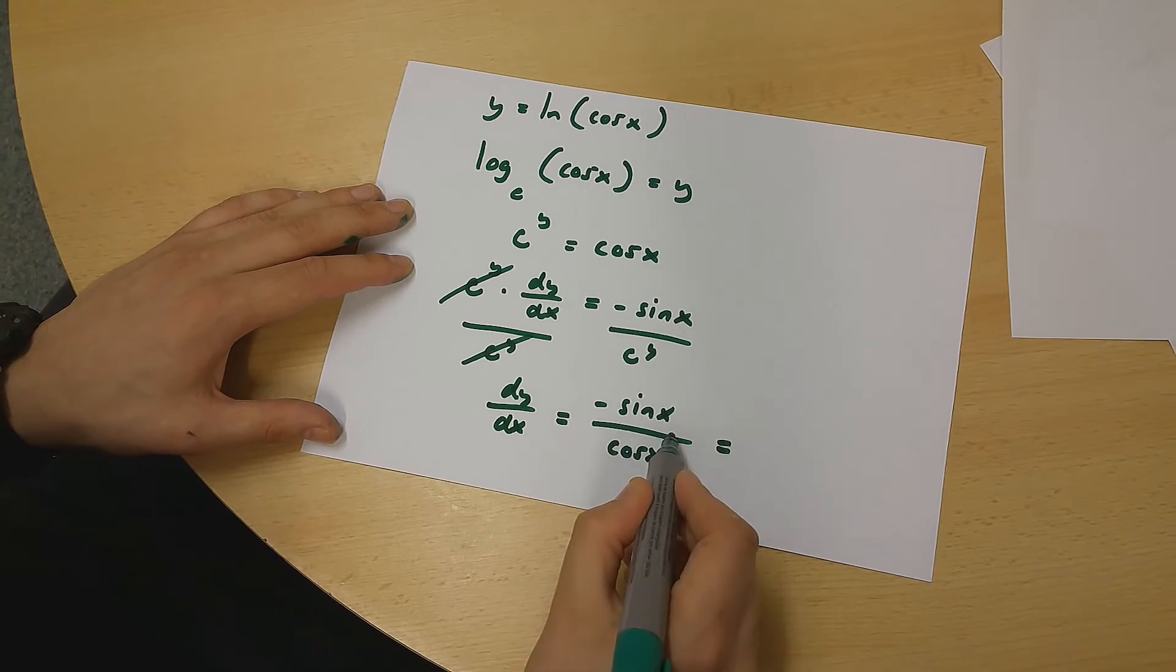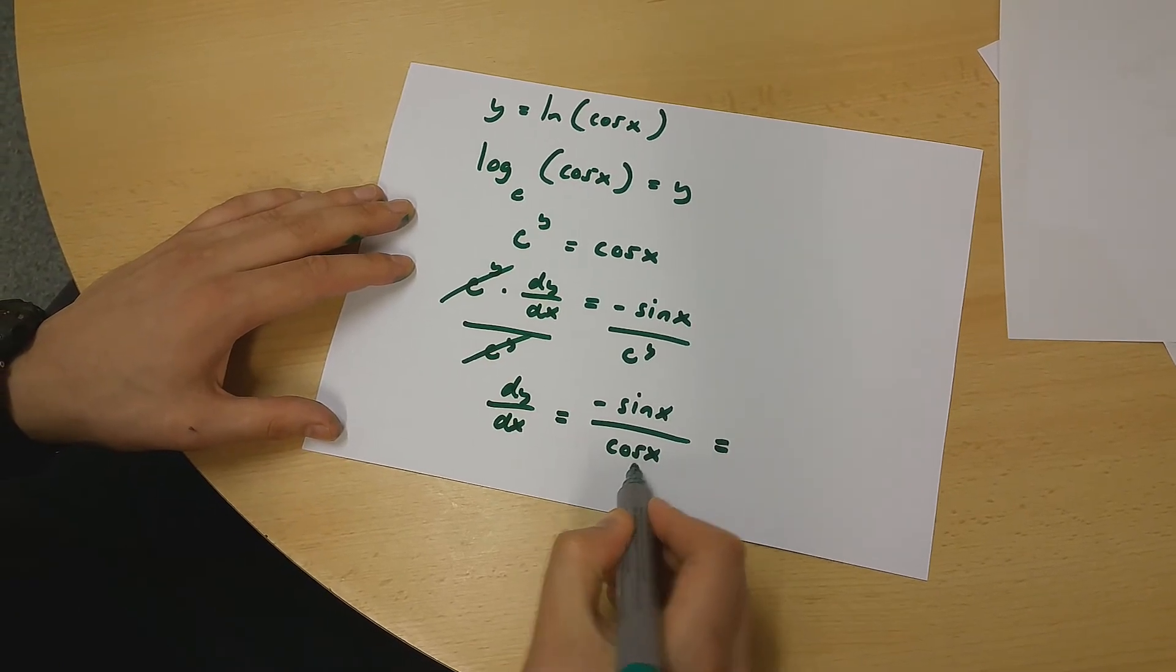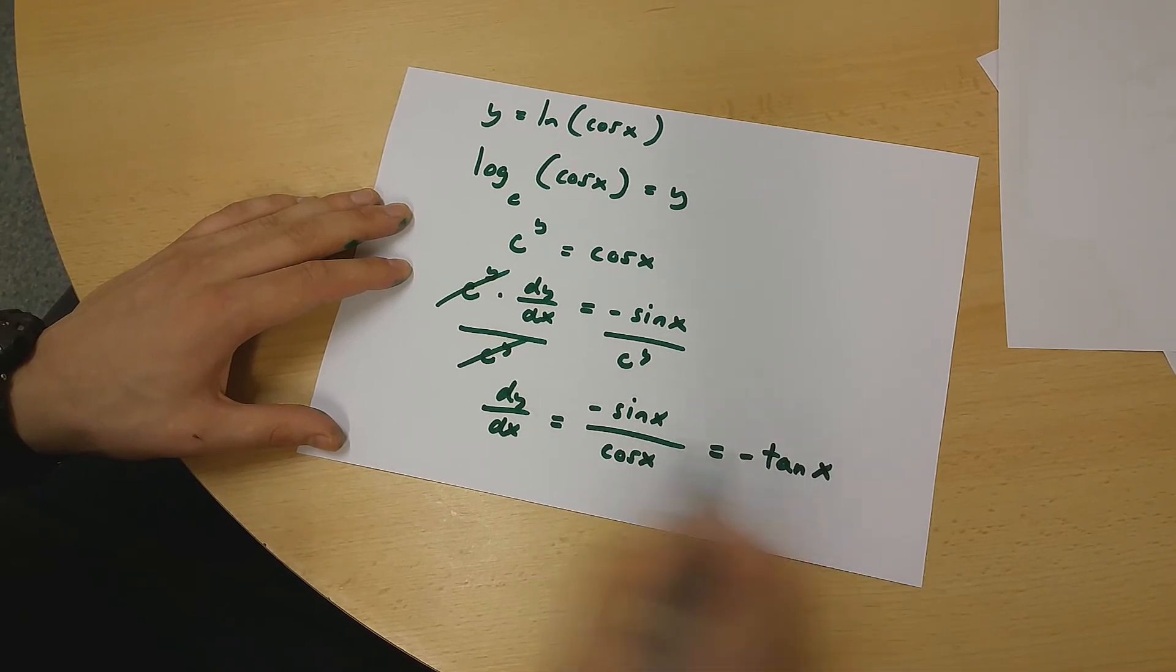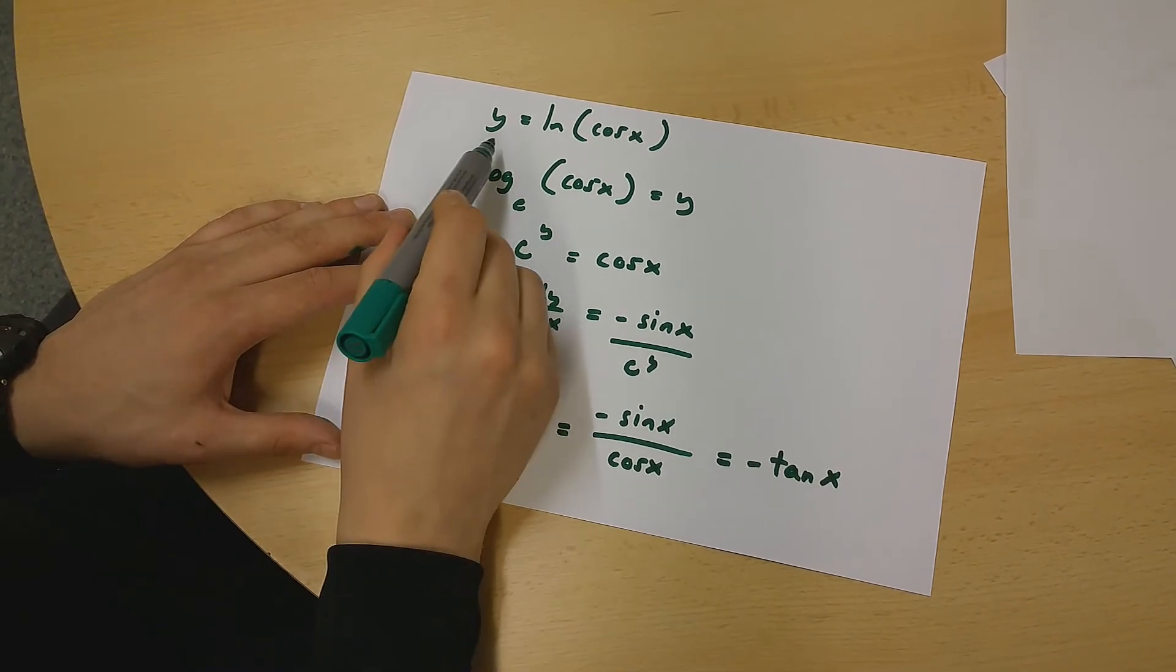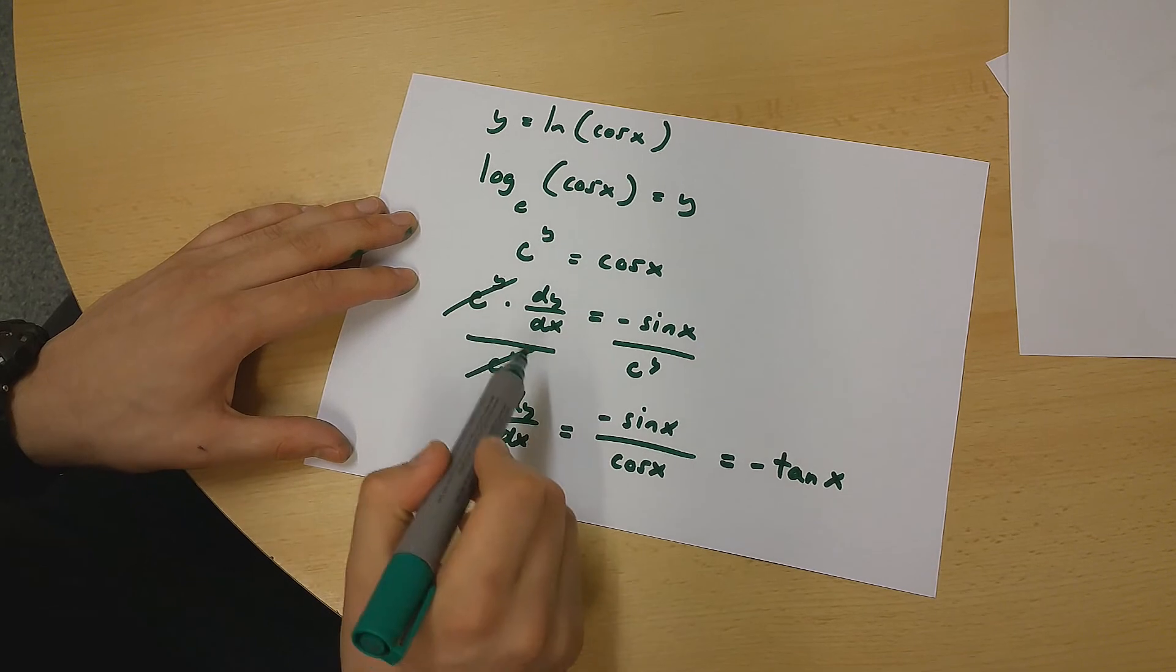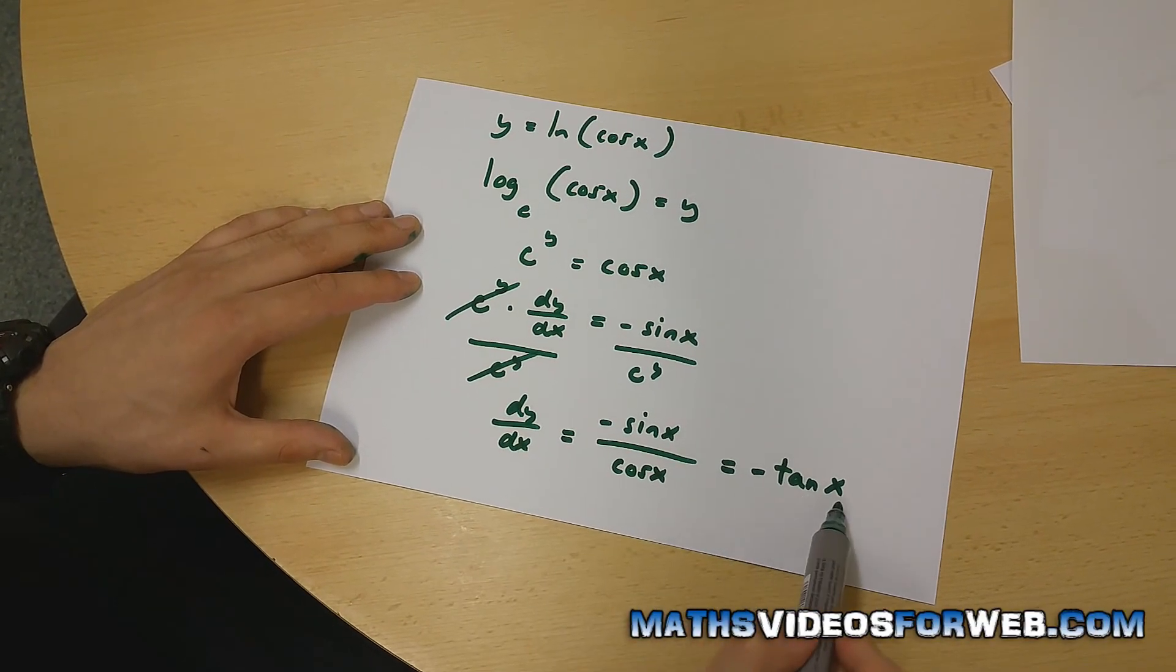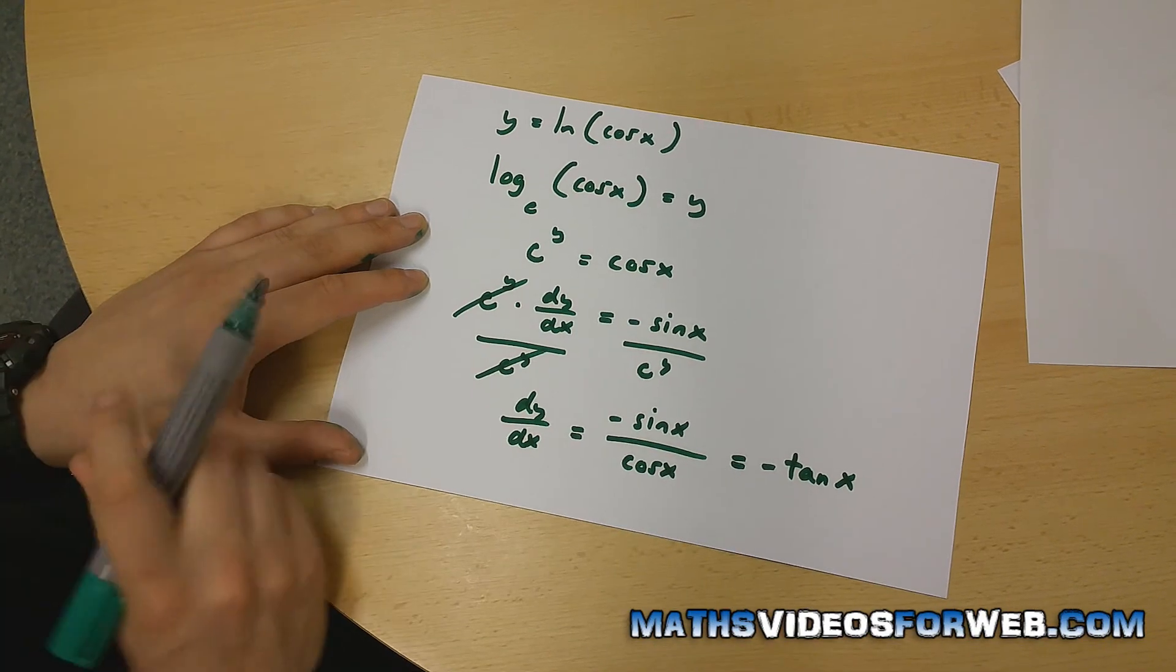And minus sin x over cos x is equal to minus tan x. Therefore, if y is equal to ln cos x, dy over dx is equal to minus tan x.